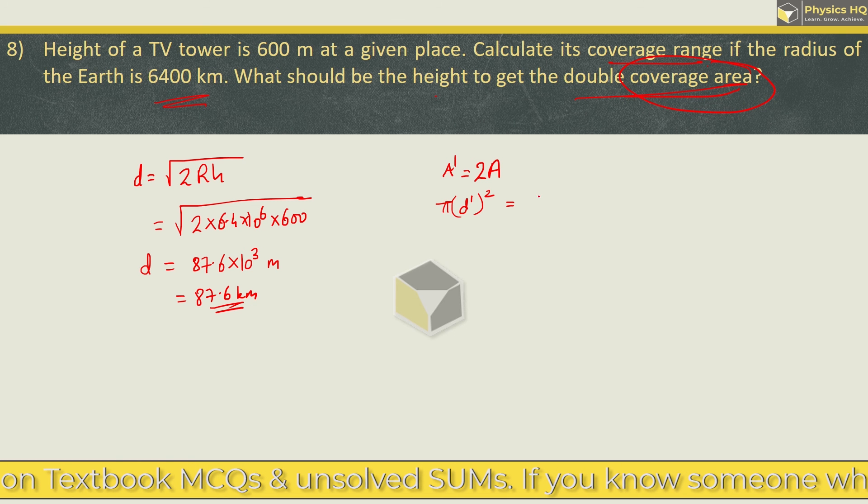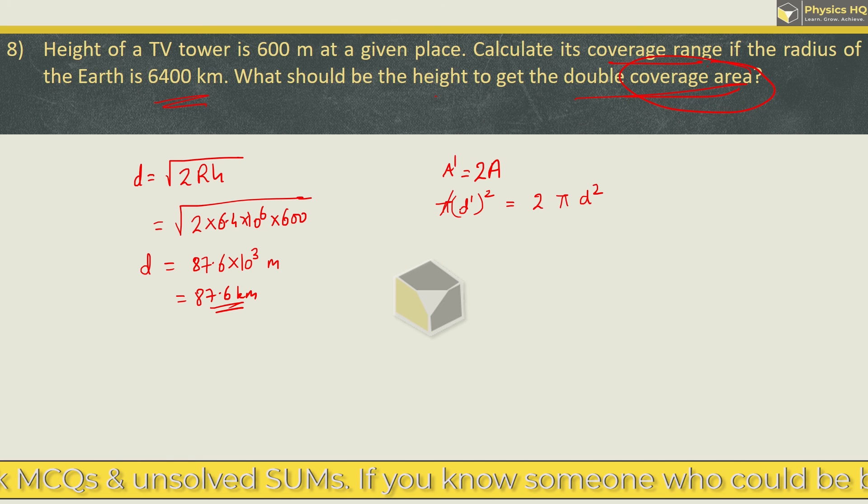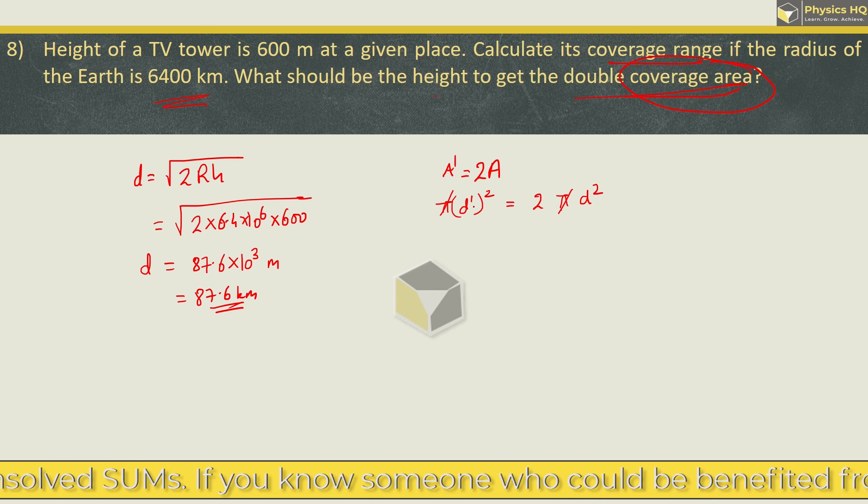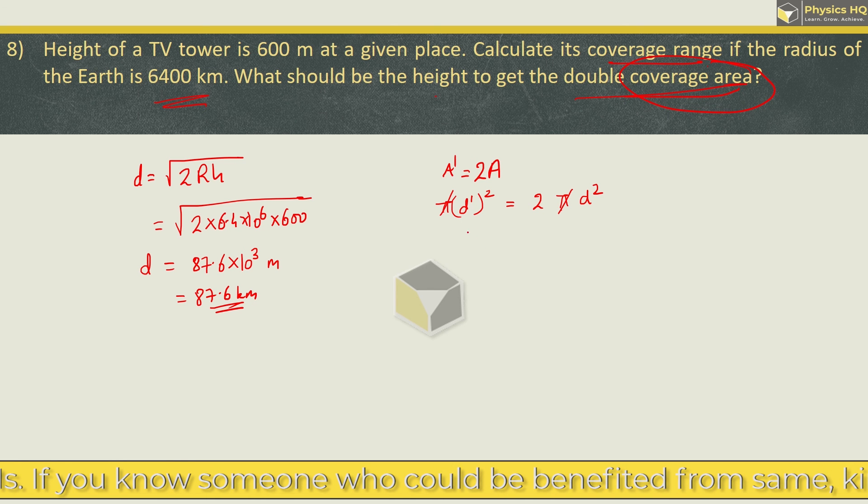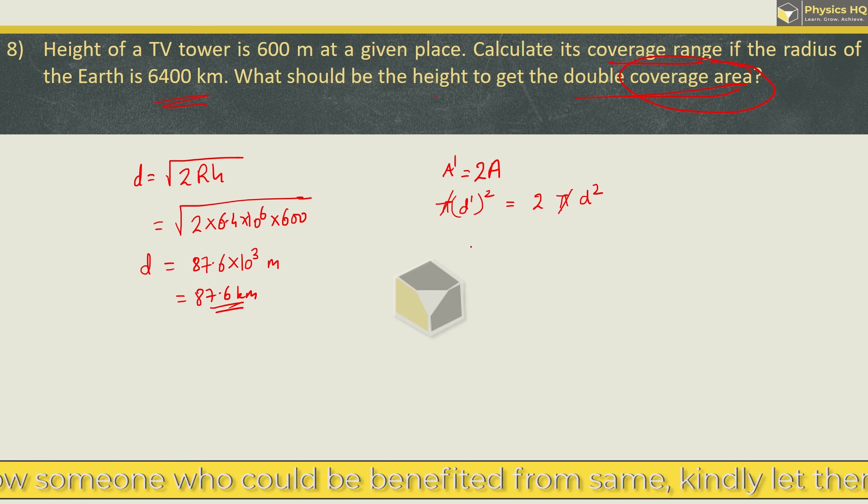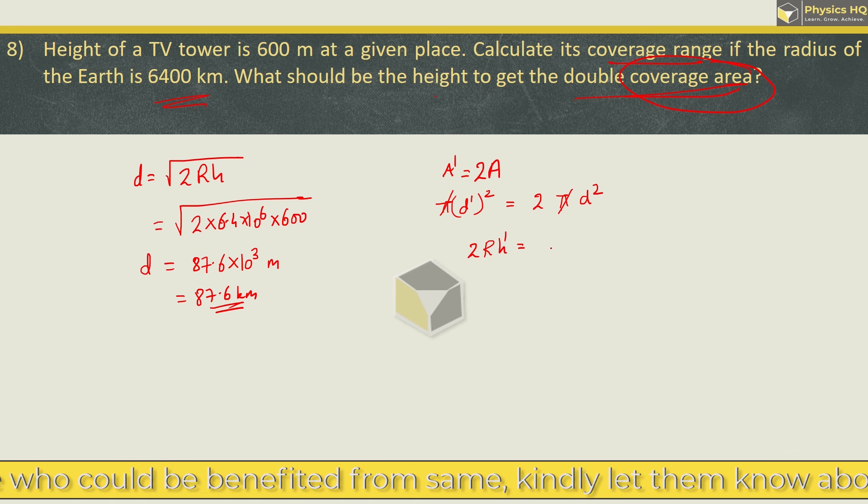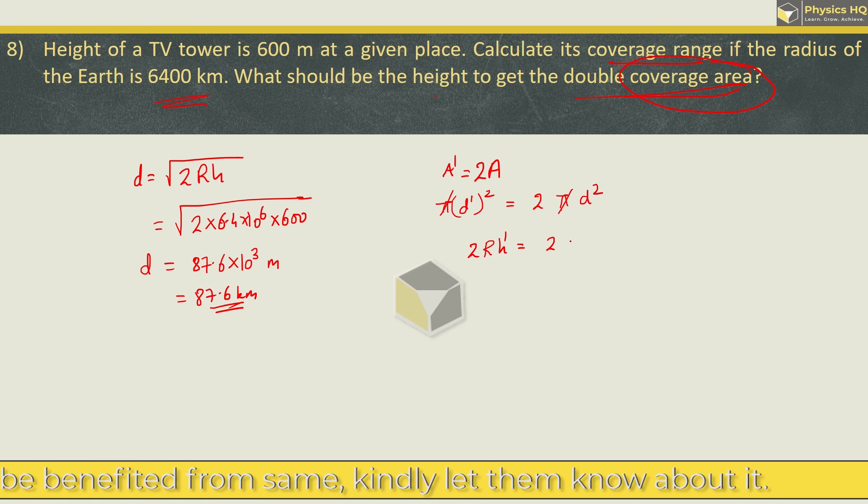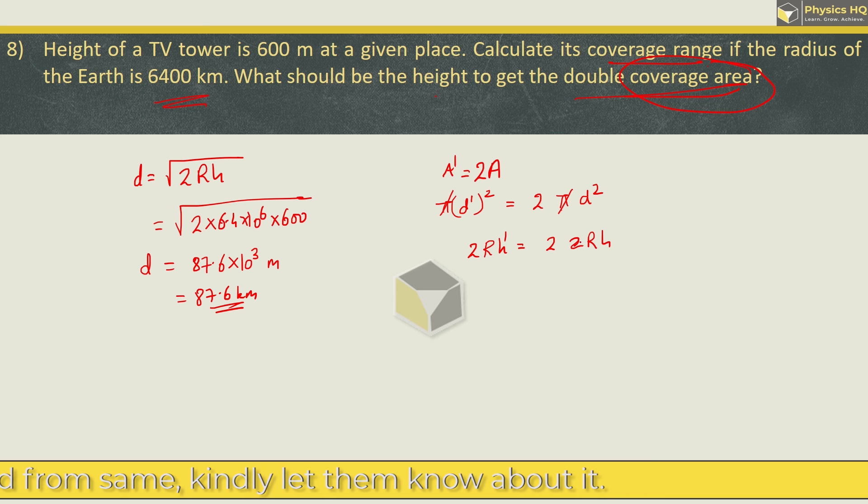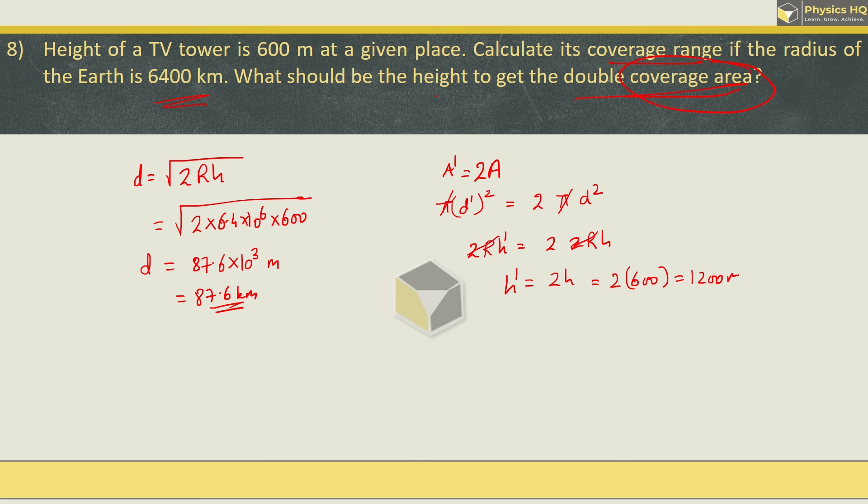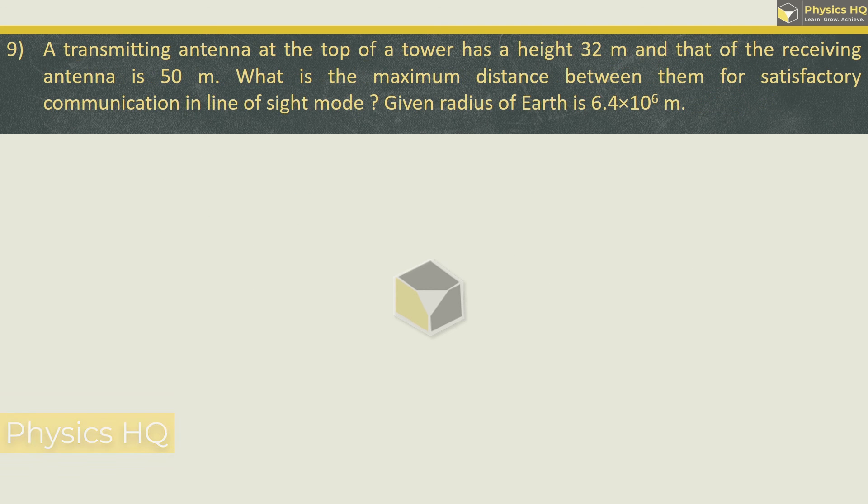Second part is if we want double coverage area. The new area has to be double the previous one. Area formula is pi D square, and distance formula is root of 2 times R times new height. So for double coverage area, height has to be doubled also.